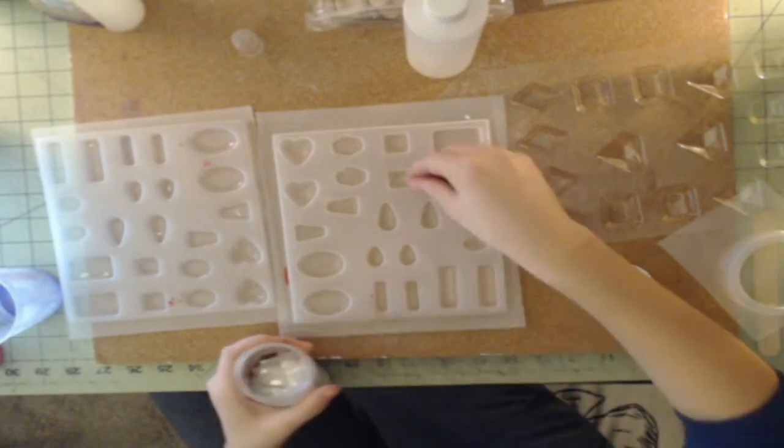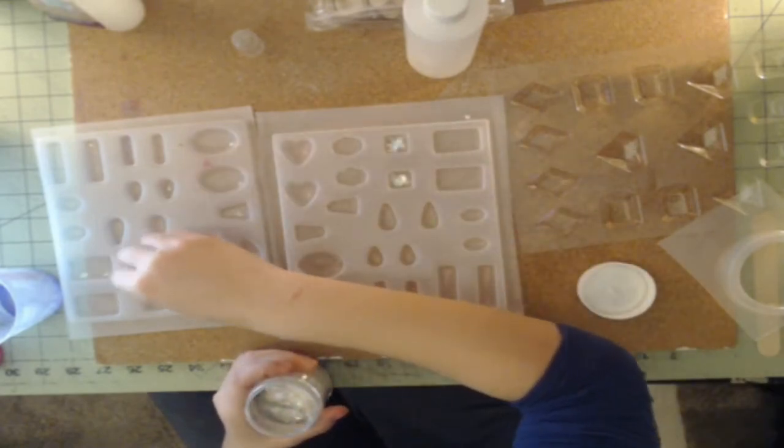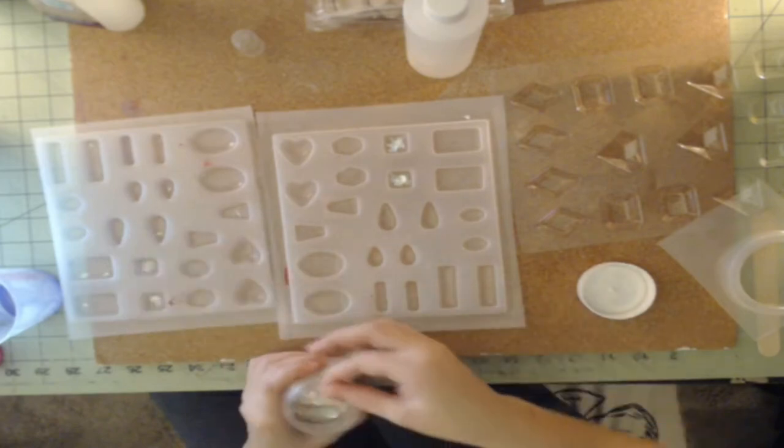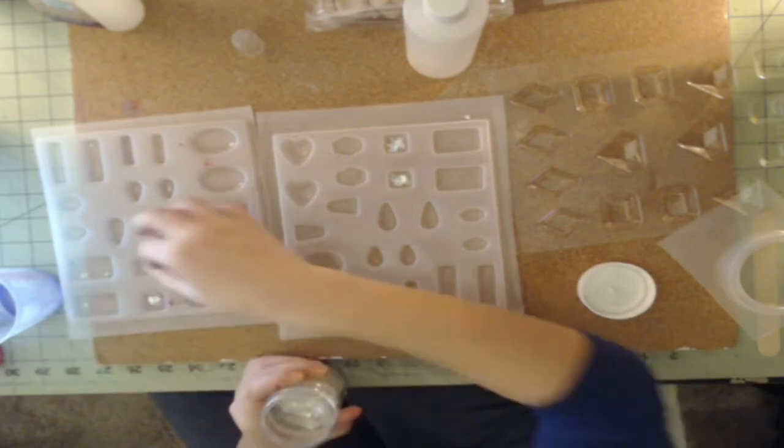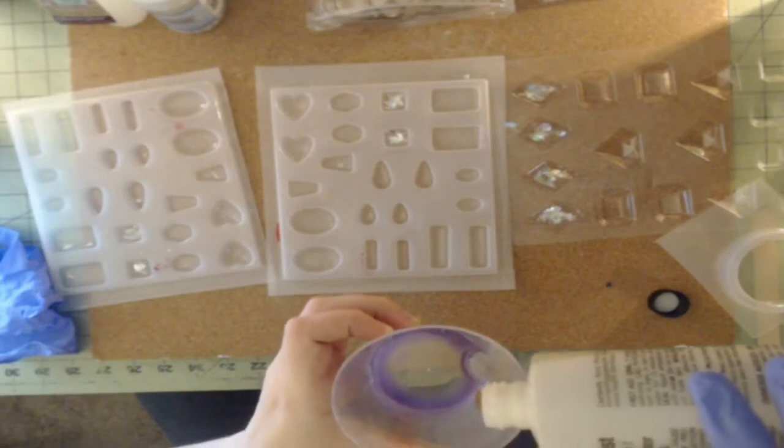Next is everybody's favorite part, resin casting my own gems. What you're seeing here is me sprinkling iridescent flakes. You can get them for like two dollars at a craft store, Joanne Hobby Lobby.